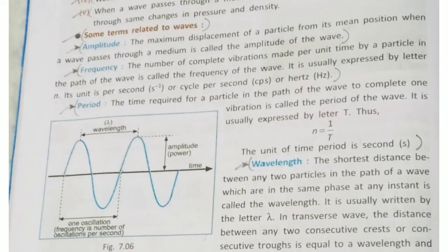Amplitude: the maximum displacement of a particle from its mean position when a wave passes through a medium is called the amplitude of the wave. Frequency is the number of complete vibrations made per unit time by a particle in the path of the wave — it is called the frequency of the wave, usually expressed by the letter N. Its unit is per second, or cycle per second, or hertz.